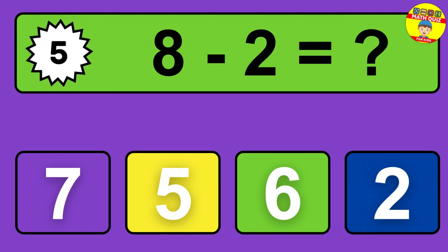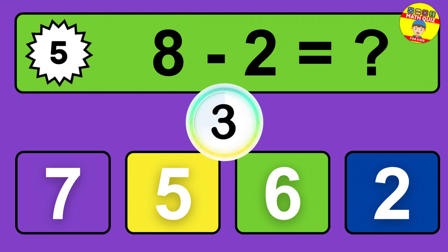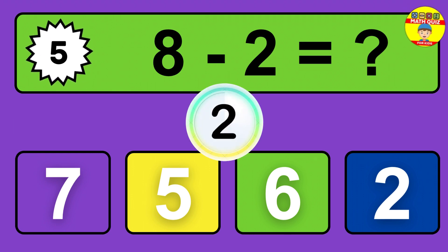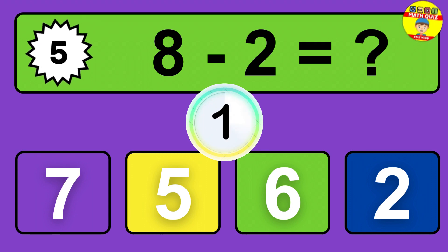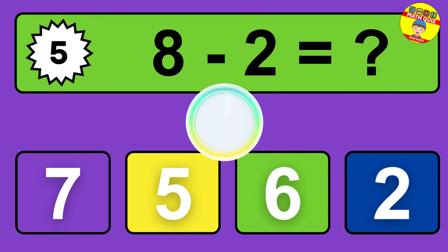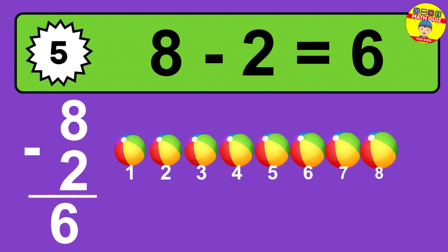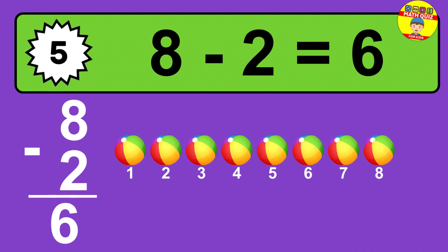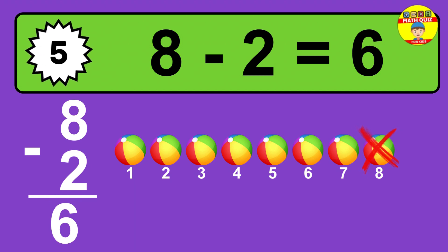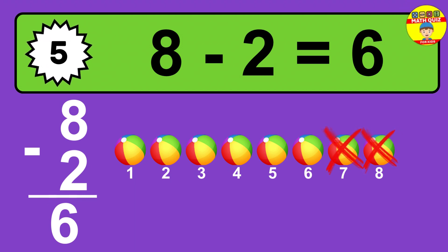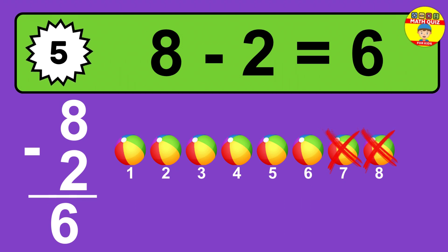Question five: eight minus two equals what? The answer is eight minus two is six. Let's count it: one, two, three, four, five, six.